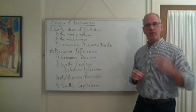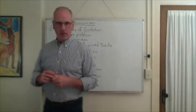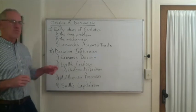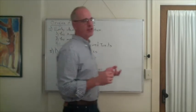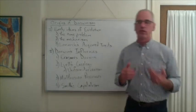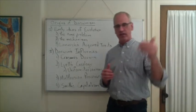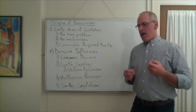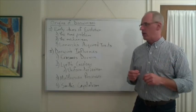We can point to several people who helped Darwin solve these two problems - the time problem and the mechanism problem. The first is a geologist named Lyell. Lyell was a major figure in geology and wrote several books that came out right when Darwin was sailing on the Beagle. In fact, he took Lyell's book on the Beagle.